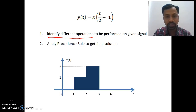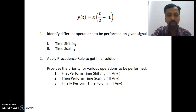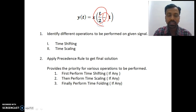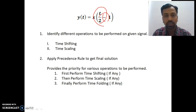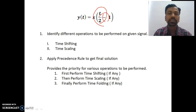If there are more than one time-related operations on the signals, you are supposed to apply a precedence rule. Here I have two different operations: the first is a time shifting operation and the second is a time scaling operation. Since two different operations are involved, I need to apply the precedence rule. The precedence rule provides a priority of various operations to be performed on any signal.